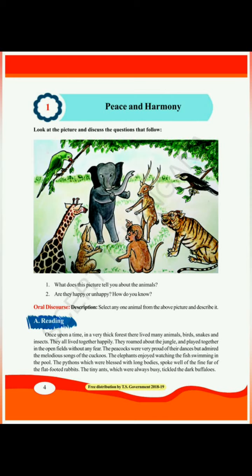Before starting the lesson, can you tell me which type of nouns are peace and harmony? These are abstract nouns — which we can feel but cannot touch or see, meaning they have no physical existence. Peace and harmony are both abstract nouns. Now, moving to the lesson. The first paragraph: Once upon a time, in a very thick forest, there lived many animals, birds, snakes and insects.